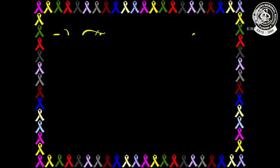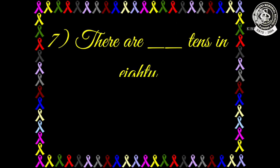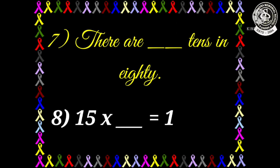Now let us see question number 7: There are dash tens in 80. That means, children, in 80 how many tens are there? You have to find out and write it down. And last, question number 8: 15 multiplied by dash equals 105. So children, you have to think about how many times we read the table of 15 so that the answer we get is 105.